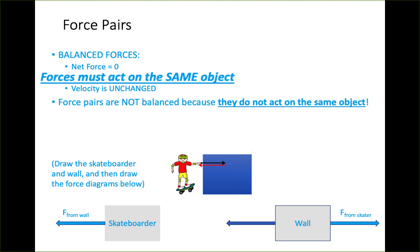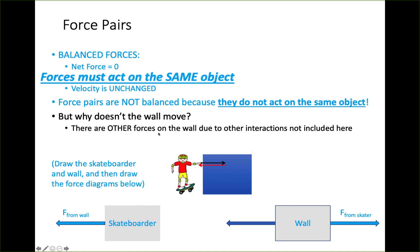The biggest factor is that forces must act on the same object in order to be considered balanced. Force pairs are not balanced because they do not act on the same object. You might wonder why the wall doesn't move — there are other forces from other interactions: the wall is also interacting with the ground and the structure. Those other interactions balance the forces on the wall, but the force pair between the skateboarder and the wall are not balanced forces.